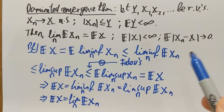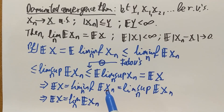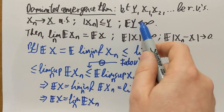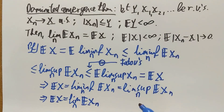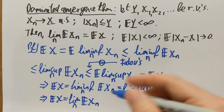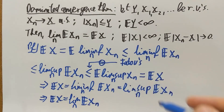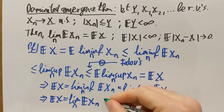It is also clear that E[|Xn|] is smaller than or equal to E[Y], which is finite, and that proves the second statement that E[|X|] is finite. Finally, if you want to show the third statement, you can repeat the whole argument on the random variable |Xn − X|.